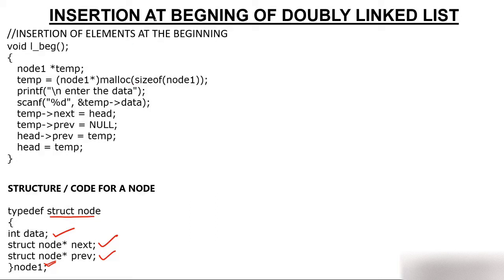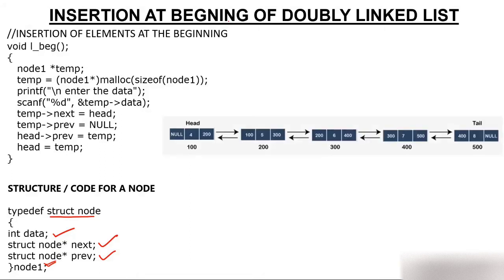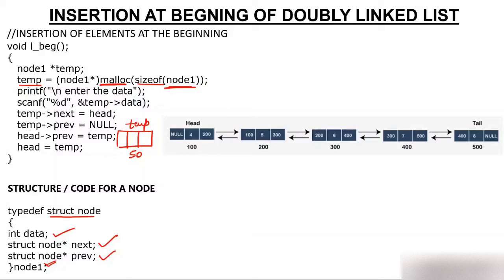We are doing insertion at the beginning, so we have to create a new node first. For creating a node we use the malloc function. We ask malloc to allocate memory of size sizeof(node1). This creates a node with three parts — one data and two addresses — and malloc returns the address of this node, which is stored in the pointer temp. Suppose the address of this node is 50, so temp will have 50.